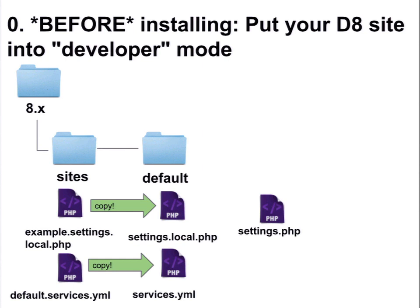So in your sites folder, you will see two files: example.settings.local.php and default.services.yaml. What you're going to want to do is copy those into your sites default directory and rename them to settings.local and services.yaml. These become things that you can override Drupal's default settings and services so that you can have local changes specific to your environment. You definitely want to do that because if you don't, you'll get a lot of white screens of death — nicely formatted, but with really no information, just saying 'the website encountered an error.'